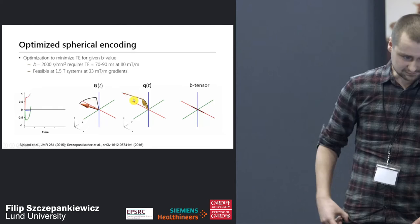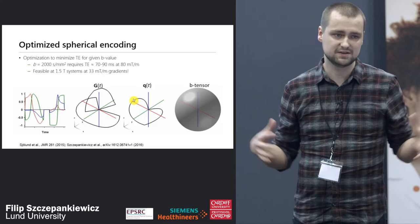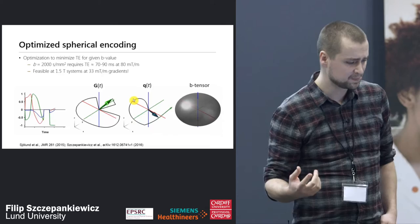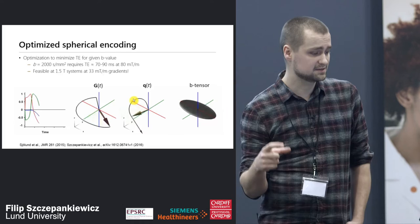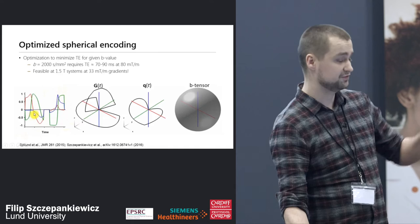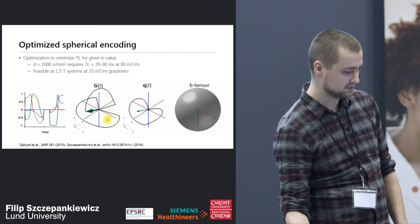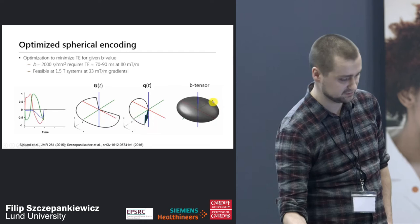In practice, this is one of the optimized waveforms we use, demanding as little time as possible to minimize echo time. For a B value of 2000, we require about 70 to 90 milliseconds echo time at 80 mT/m. We've done these experiments at the Connectome scanner and at Prismas, but also at 1.5 tesla systems with gradients as weak as 33 mT/m. The waveform fits into a spin echo — excitation before, refocusing in the middle with gradients off, then continuing encoding afterwards. We have this gradient trajectory, the Q trajectory, and we can see how the B tensor grows during time — this one is specifically isotropic.